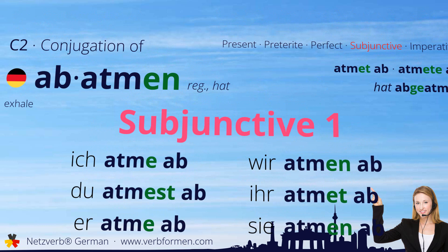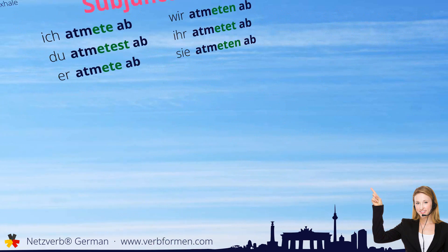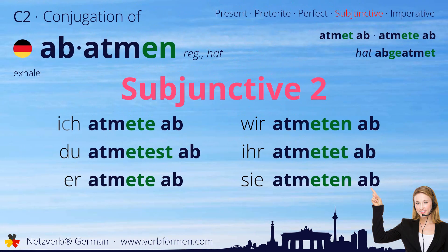Now we move on to the subjunctive two. Ich atmete ab. Du atmest ab. Er atmete ab. Wir atmeten ab. Sie atmeten ab.